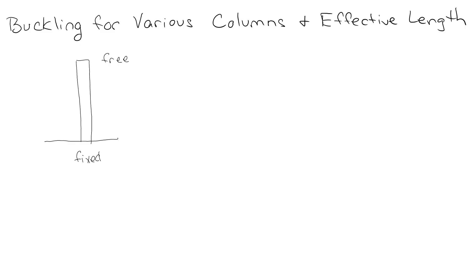Now we're going to look at buckling for different types of columns. I made a previous video on what happens if you have a pin at the top and bottom, just to go through all the math. But now we're going to look at what happens when we have other types of end conditions.